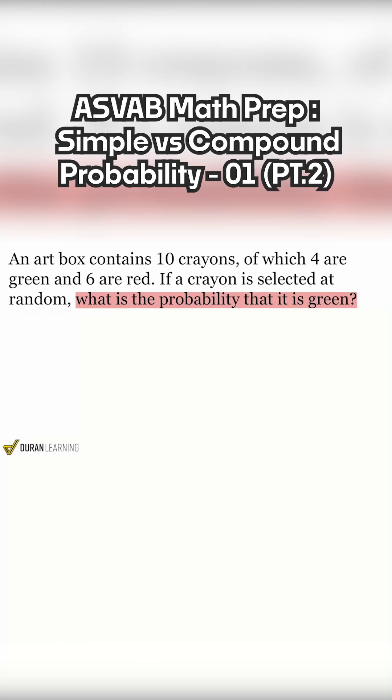It's saying here that if a crayon is selected at random, what is the probability that it is green? Everybody, what are we trying to calculate? Are we trying to calculate the probability of one event happening, or multiple events happening? Correct, just one event. Exactly.